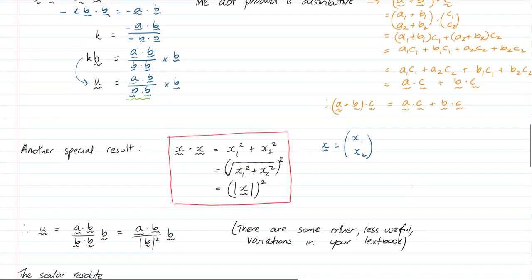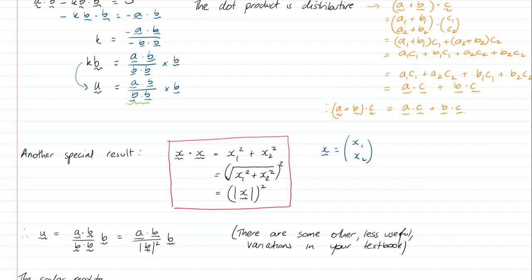Here we go. U equals A dot B over B dot B times B, which is equal to A dot B over B squared times B. There are some alternatives to this that involve B hat in particular. To be honest, I'm going to leave it as this and let you deal with those if you want to. They do appear in most textbooks. These two will pretty much cover all bases.